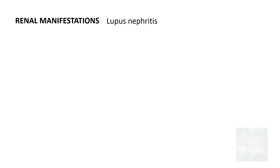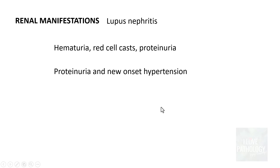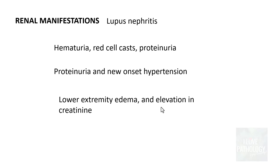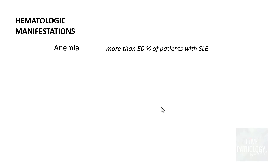We have discussed the renal manifestations in detail when covering the morphology of SLE — that is lupus nephritis. The clinical features of lupus nephritis include hematuria, red cell casts, and proteinuria. Whenever there is proteinuria with new-onset hypertension, lower extremity edema, and elevation in creatinine, you should suspect lupus nephritis as an important cause.